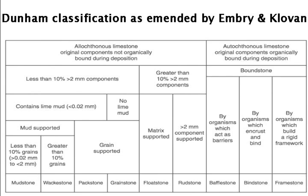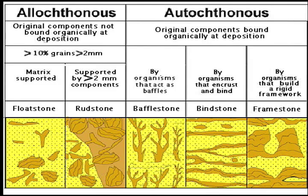Similarly, if the grains of a wackestone are more than two millimeters in diameter, the rock is a floatstone. Boundstone is used to name original components organically bound during deposition. This category has been differentiated by Embry and Klovan into bafflestone — organisms acting as baffles — bindstone — organisms encrusting and binding — and framestone — organisms building a rigid framework.